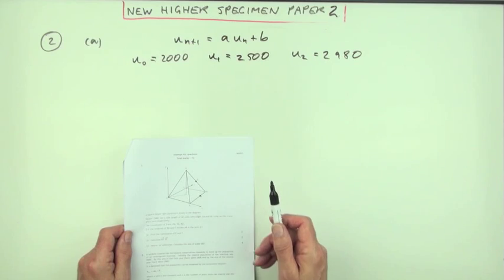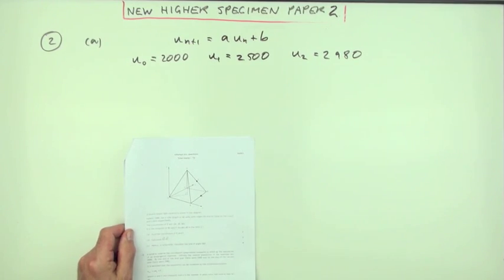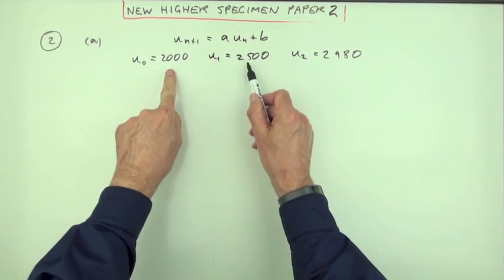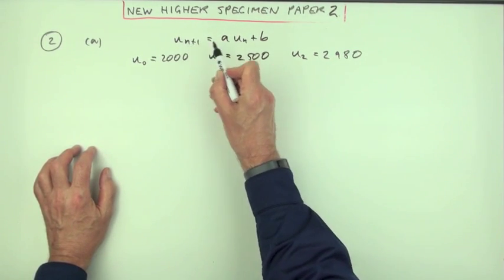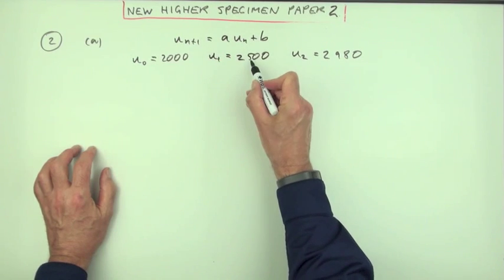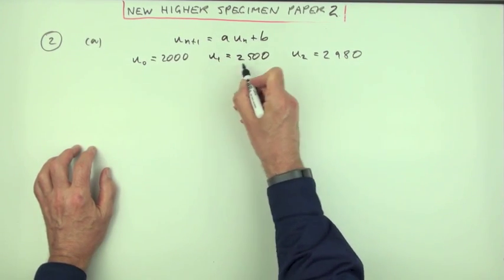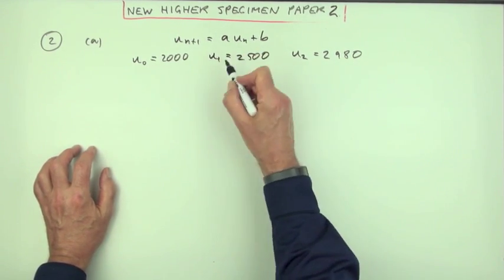Part A, use the above information to find the values of A and B. Well if they fit this recurrence relation you could just put them in. U(n+1), that means one more than this, just the following one. Well 2,500 follows this one. I'll write it the other way around though.